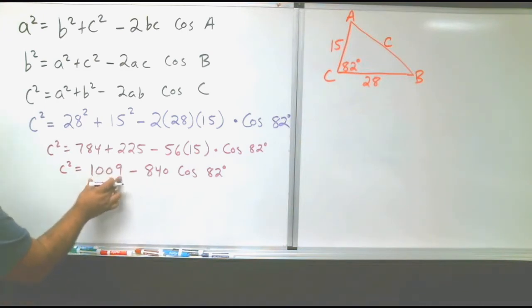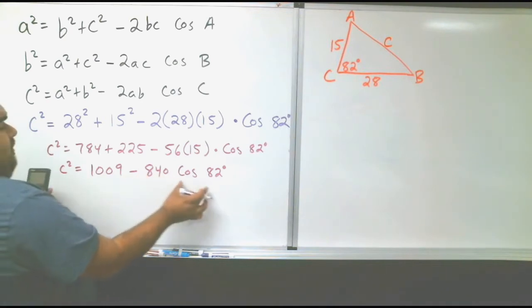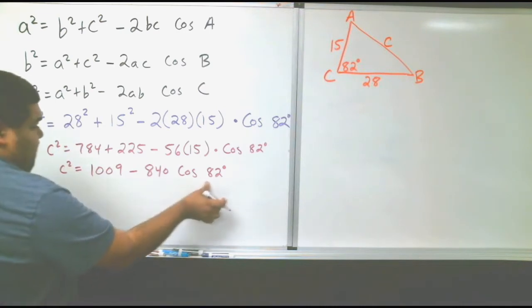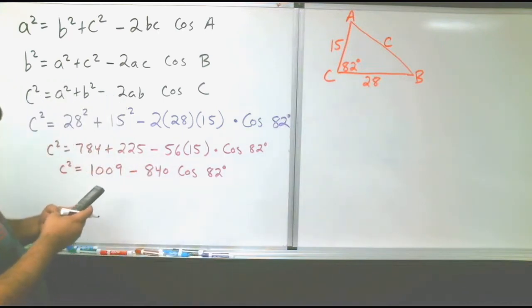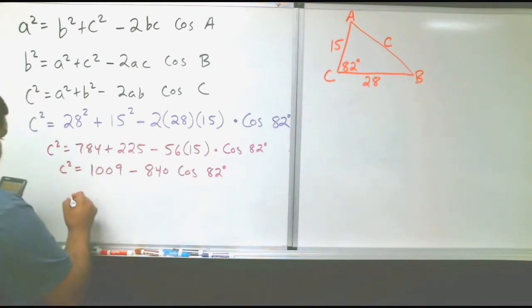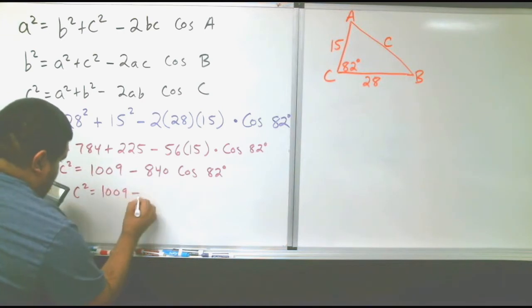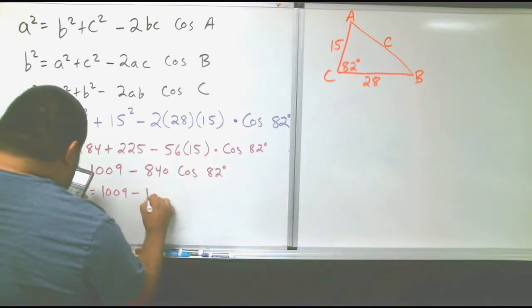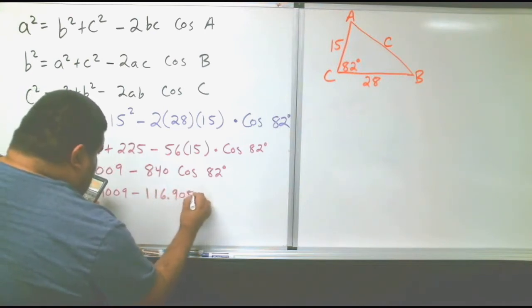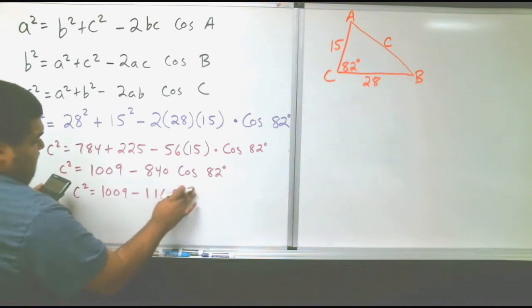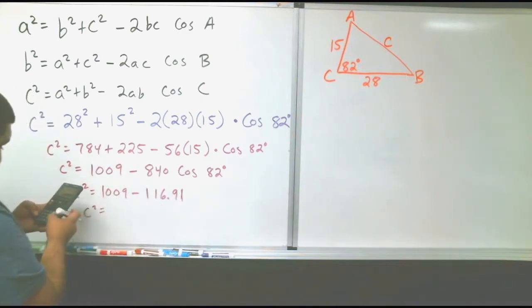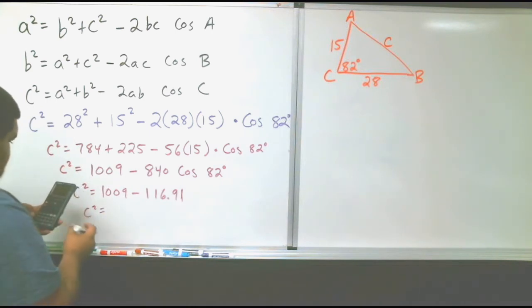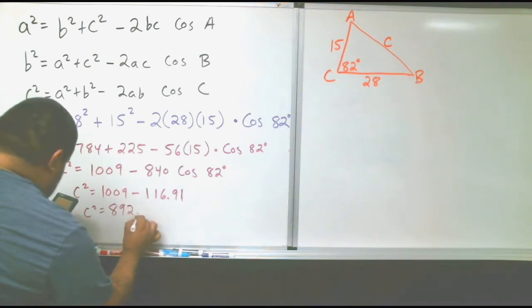So we have C squared equals 784 plus 225 equals 1,009 minus 56 times 15, 840, times cosine of 82 degrees. Remember, we cannot combine 1,009 minus 840 because 840 is being multiplied by cosine of 82. So we have to solve for that part first. So 840 times cosine of 82, which gives us C squared equals 1009 minus 116.905, which technically the 5 becomes a 1. We round it.